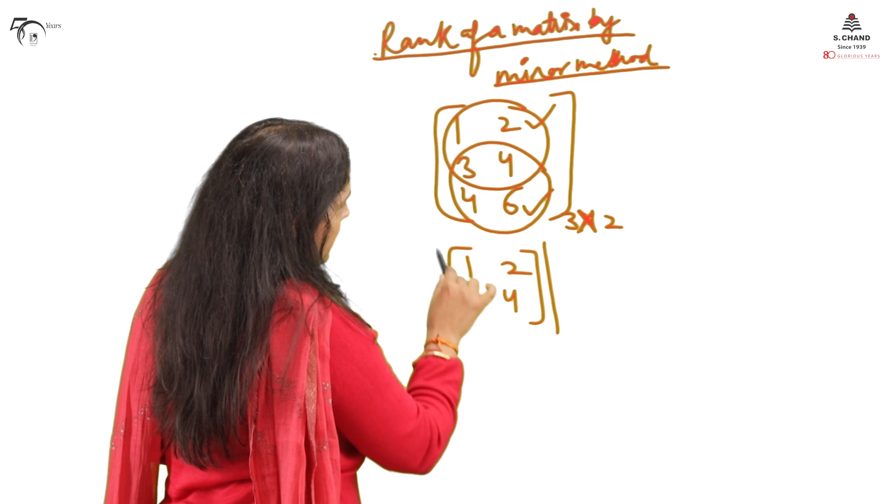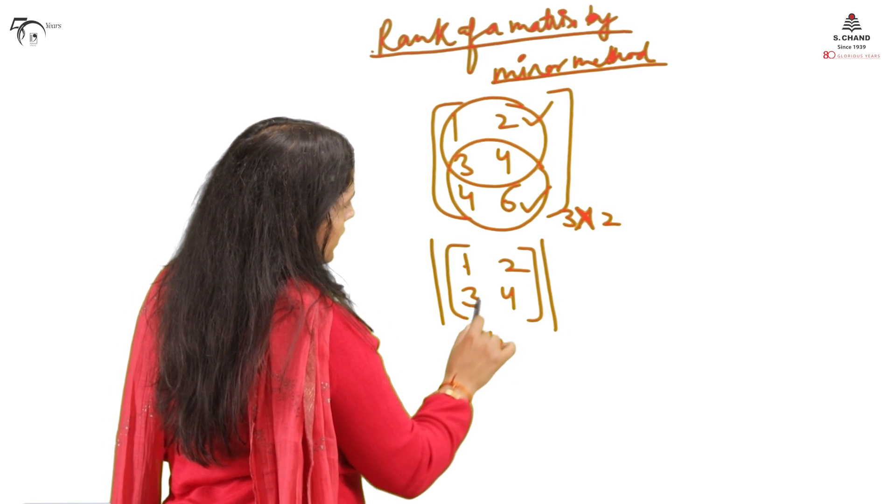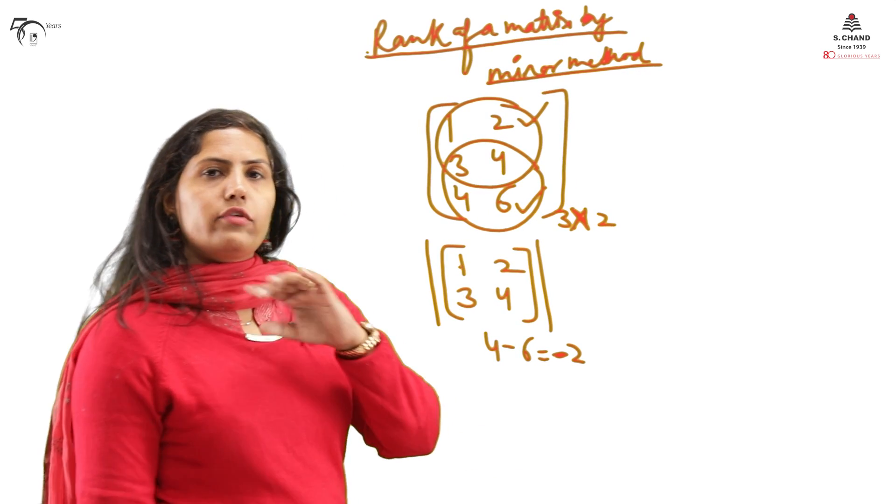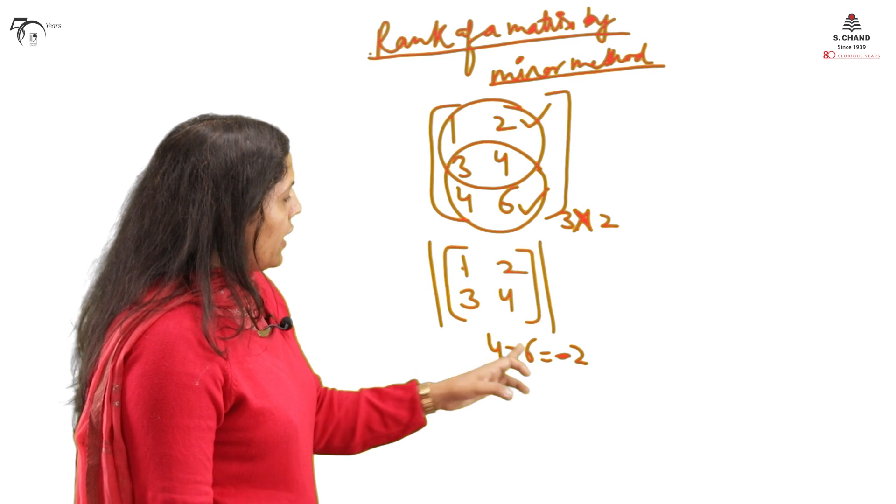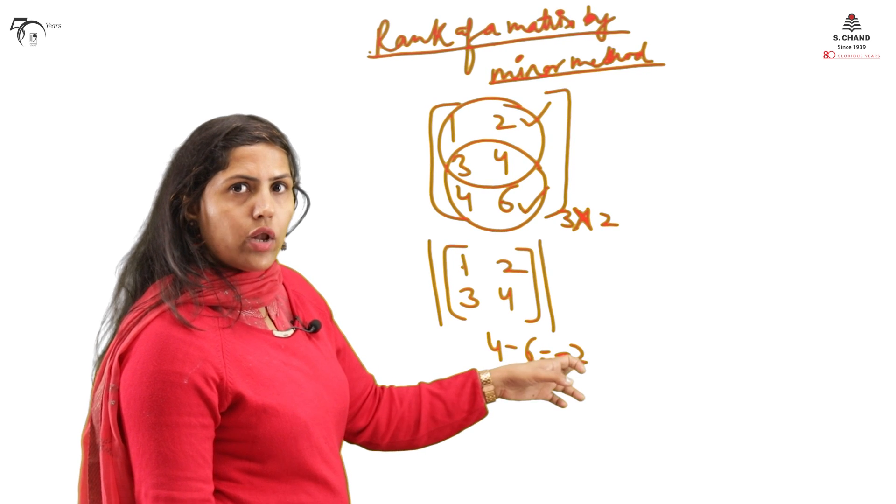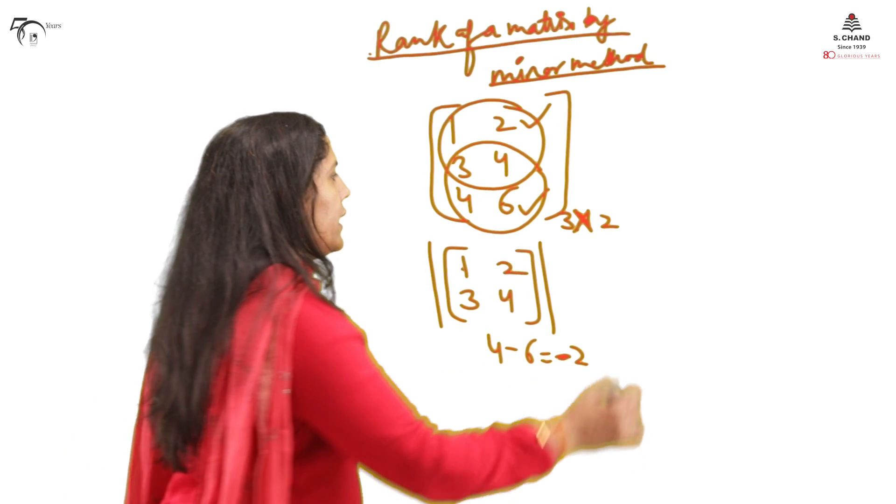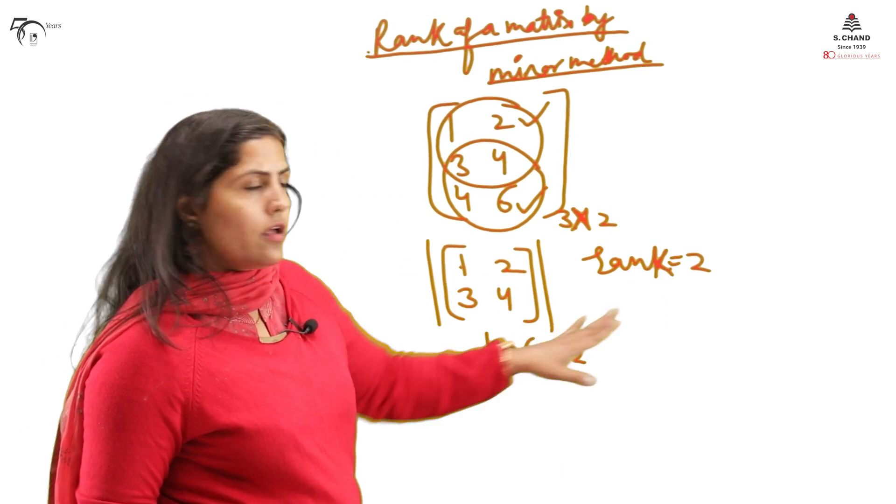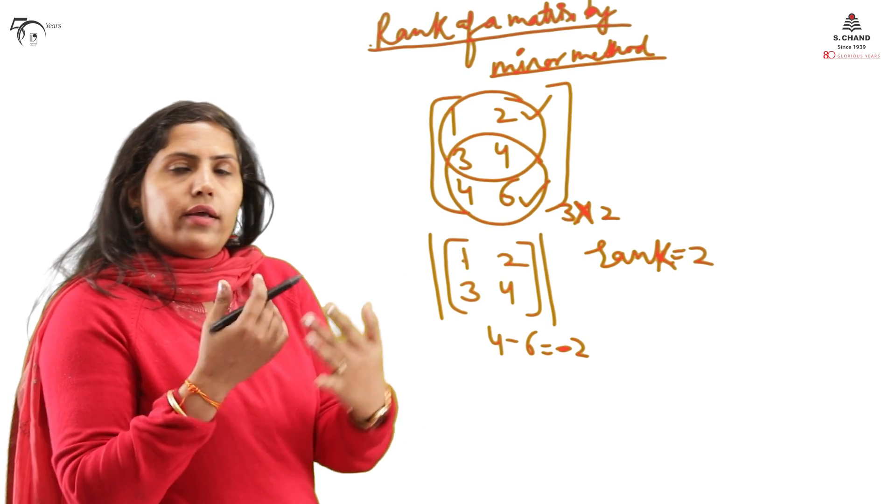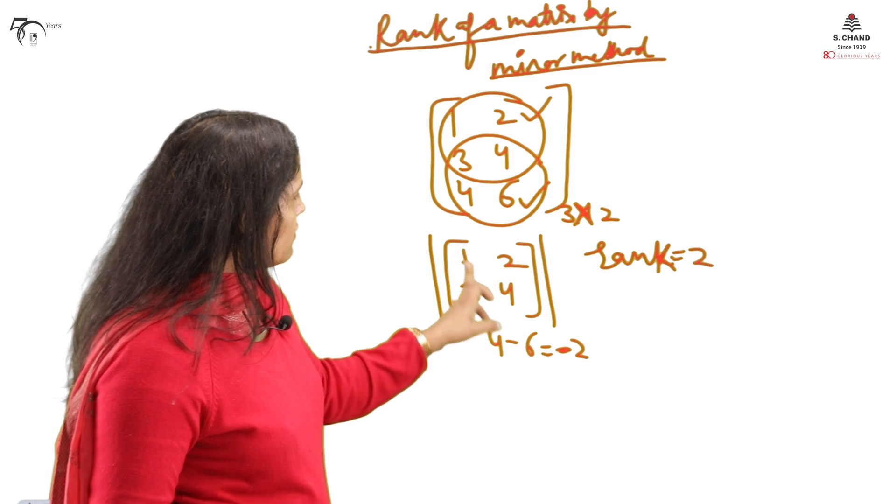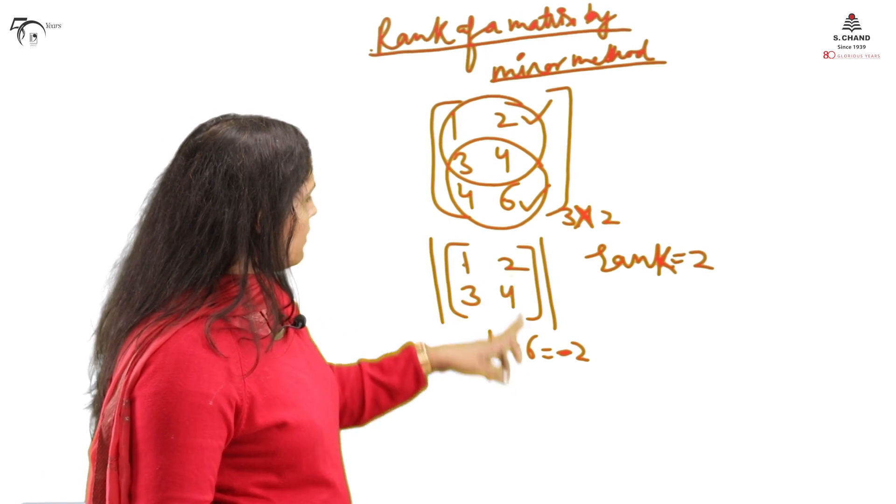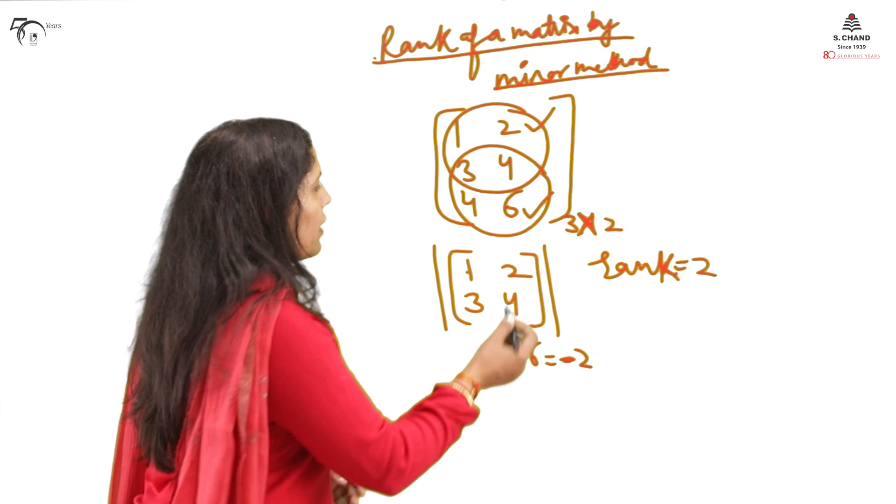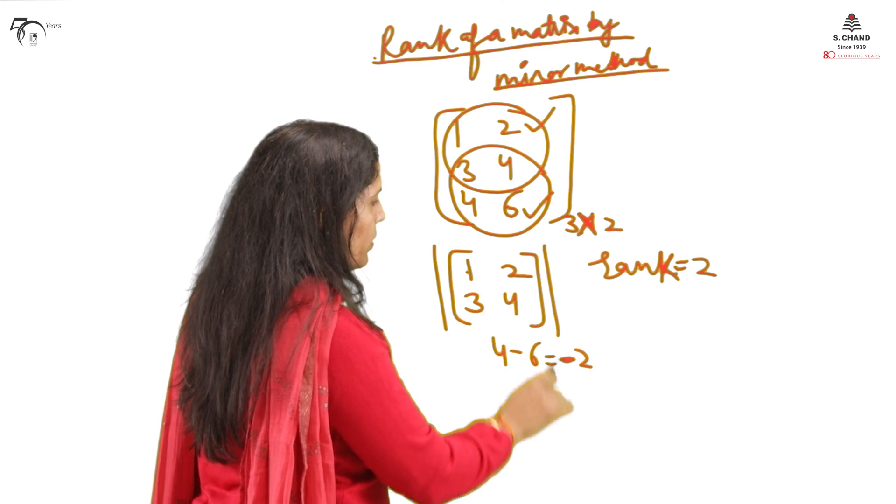So I am considering this square matrix. And now take up the minor part. Minor means multiply this into this, then this into this minus. You are getting non-zero. So the highest 2 by 2 matrix you are able to extract from this order matrix, and the minor value or determinant, the determinant value is non-zero. The minor, 4 into 1, so 4 minus 6 is minus 2.